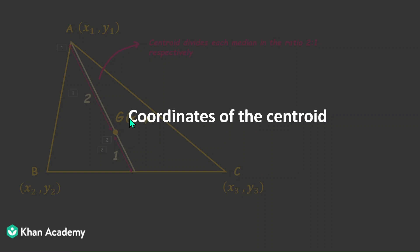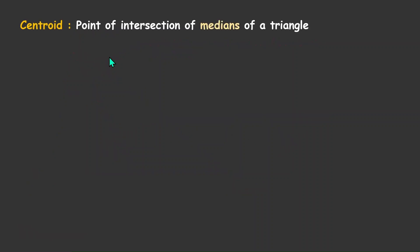Hi everyone, today we'll find the coordinates of the centroid. So first let's be very clear on what a centroid of a triangle is. A centroid is the point of intersection of medians of a triangle.